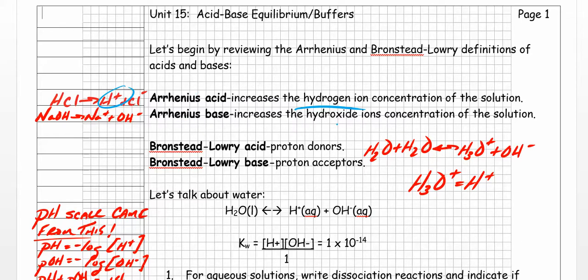Likewise, if you have something that increases the hydroxide or OH- concentration, that's going to be classified as an Arrhenius base. So sodium hydroxide, for example, will dissociate into Na+ and OH-, and that classifies it as an Arrhenius base. Make sure you keep these straight: Arrhenius acid increases hydrogen ion concentration, Arrhenius base increases hydroxide ion concentration.